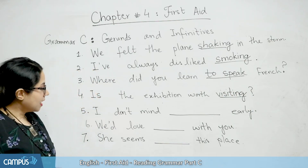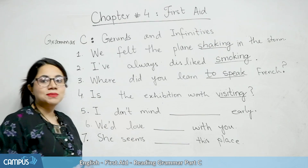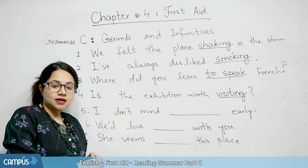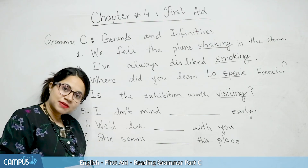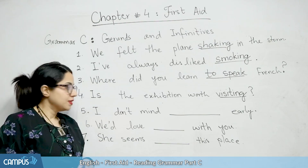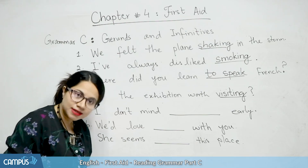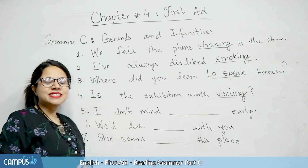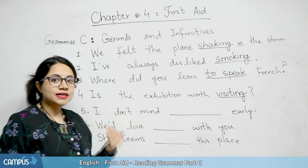The next sentence is: 'I don't mind blank early,' and in brackets we have 'get up.' Should it be 'I don't mind to get up early' or 'I don't mind getting up early'? Obviously the answer is 'getting up early.' So: 'I don't mind getting up early.'